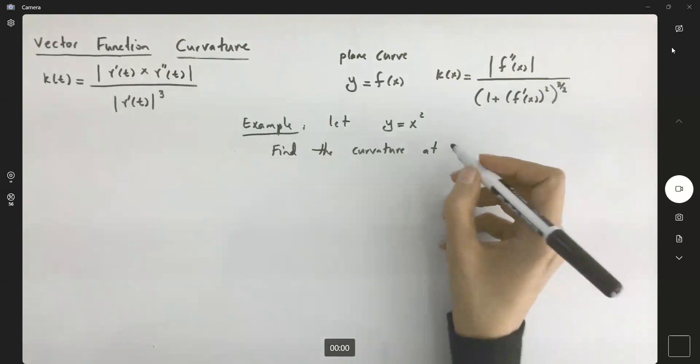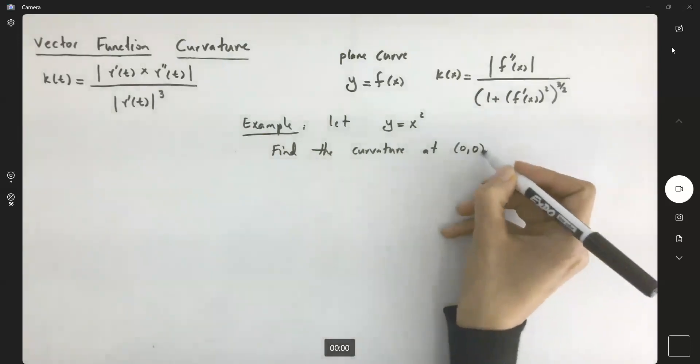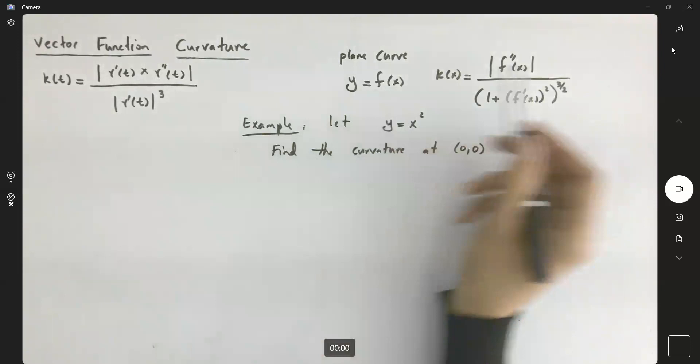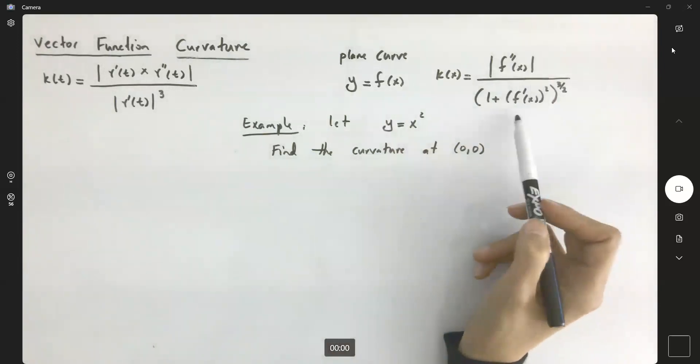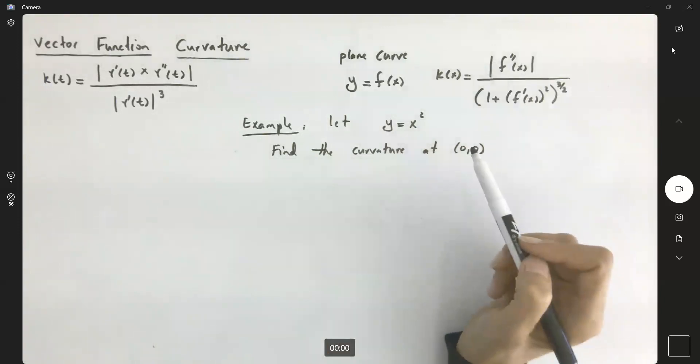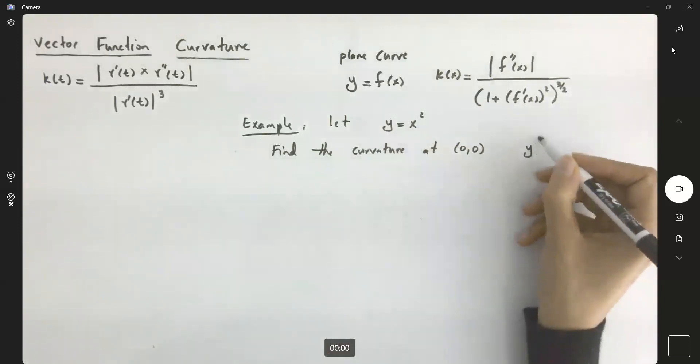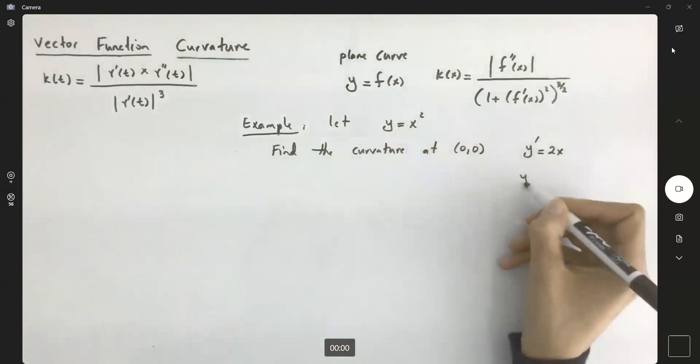at, for example, the origin. So let us follow the formula. First we need to have the derivative of the function, the second derivative of the function, so y prime is 2x and the second derivative is equal to just 2.